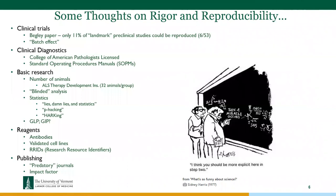In our lab at the microscopy imaging center, we also do clinical diagnostics. We are licensed by the College of American Pathologists, which means we have SOPs and get inspected on a biennial basis. All our procedures are checked. At least in the diagnostic world, the rigor and reproducibility we are subjected to are very intense. That's not often the case in basic research.